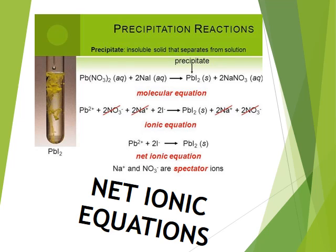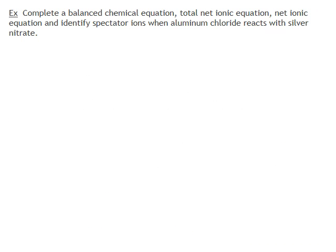In this video, we're going to look at some net ionic equations. All right, so we're going to do three things here. First, we've got a balanced chemical equation, and we're going to do the reaction between aluminum chloride and silver nitrate. So there's aluminum chloride and there is silver nitrate.